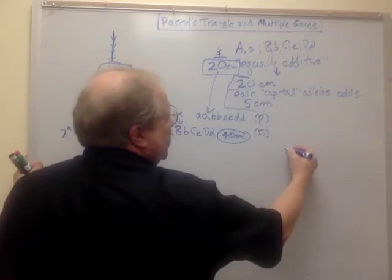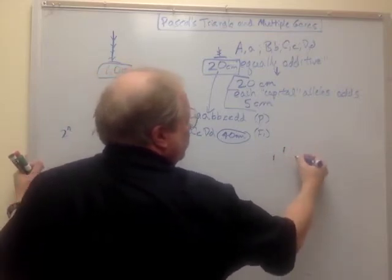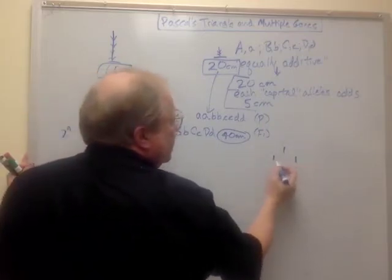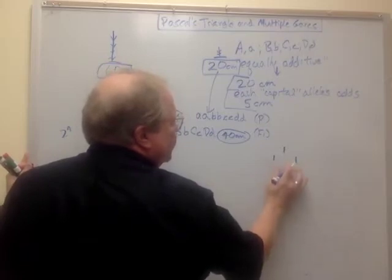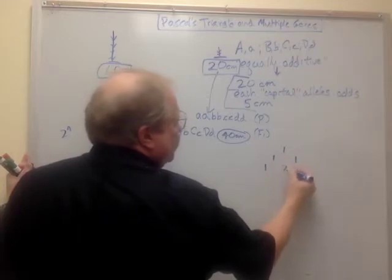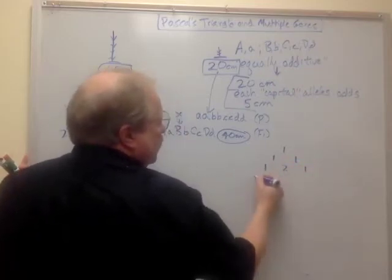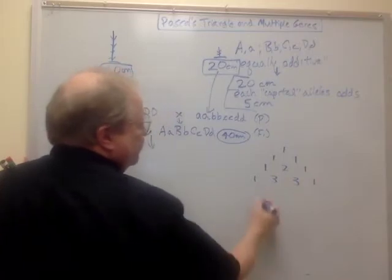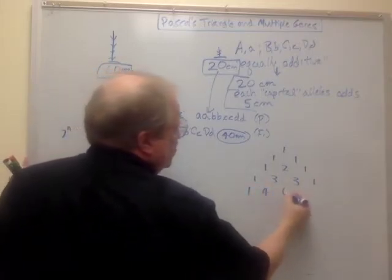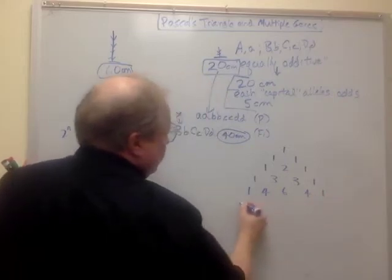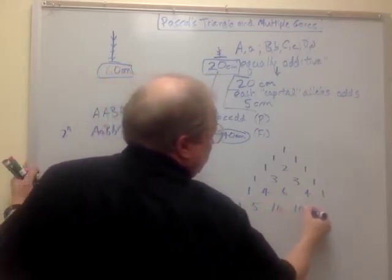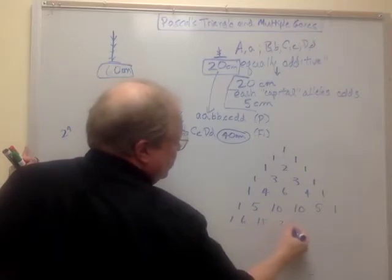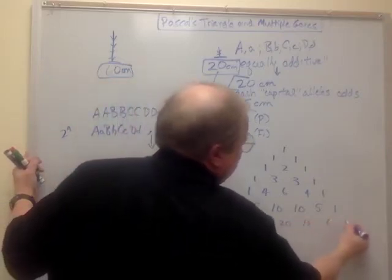Let me first show you what Pascal's Triangle is. You put a 1 at the top, then always write a 1 on the outside, and add the two inner numbers together to get the next number. So we get 1, then 1-2-1, then 1-3-3-1, then 1-4-6-4-1, then 1-5-10-10-5-1, then 1-6-15-20-15-6-1. We'll stop right there, though we could keep going.